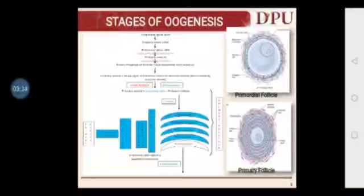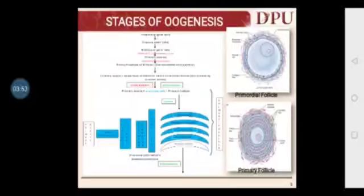So the germ cells first mitotically divided and produced many germ cells, which then entered meiosis 1. Meiosis 1 was not completed — only prophase 1 took place. This structure is called the primordial follicle, consisting of a primary oocyte and a single layer of follicular cells. You can see the picture of the primordial follicle on the right side of the diagram.